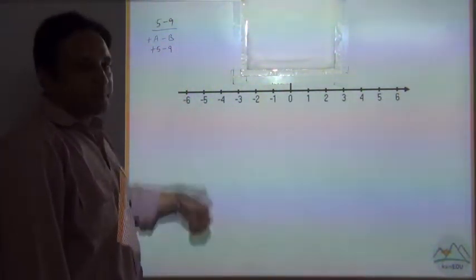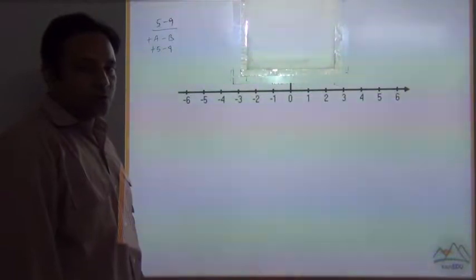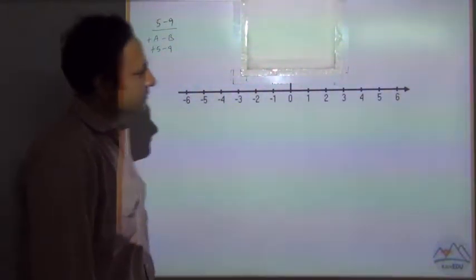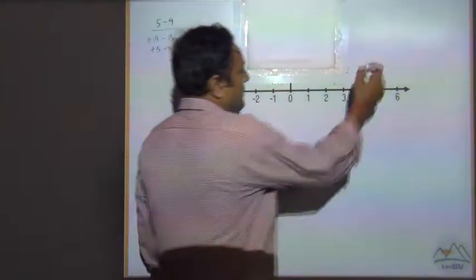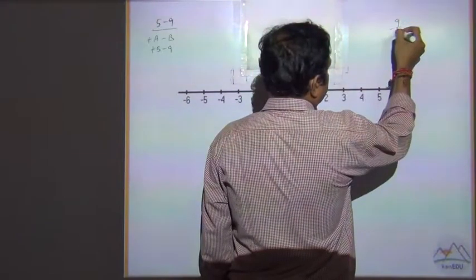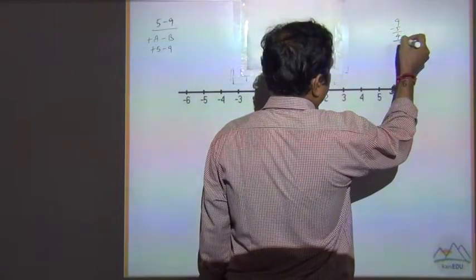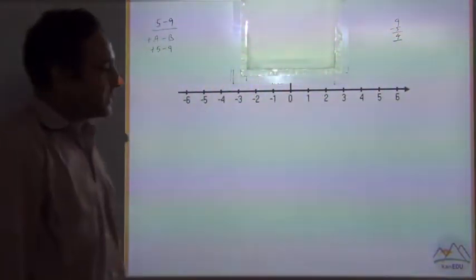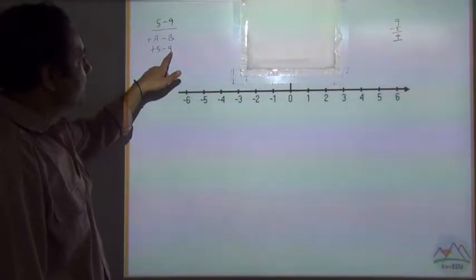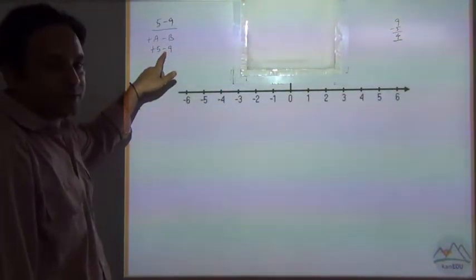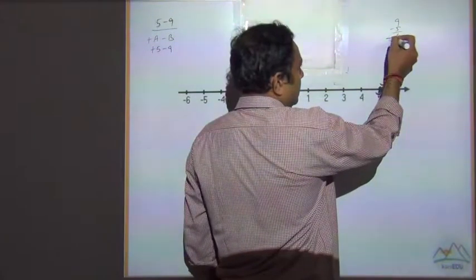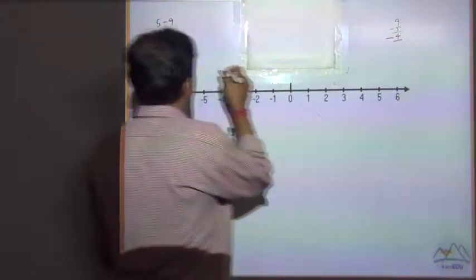For different signs, subtract from the higher to the lower number. The higher number is 9 and the lower number is 5. So 9 minus 5 is 4, and we put the sign of the higher number. The higher number has a minus sign, so the answer is minus 4.